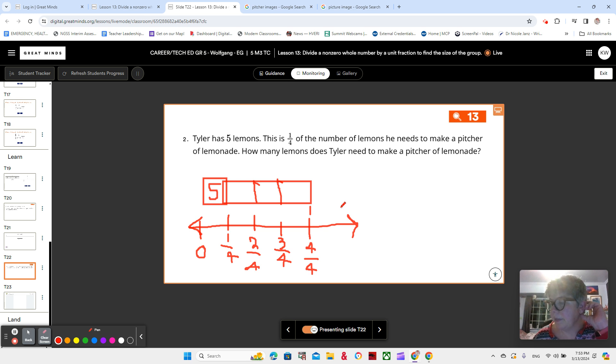All right. So how many lemons does Tyler need to make a pitcher of lemonade? We could be thinking about multiplication, right? And we could also be thinking about division. So let's think about what we've been talking about with division lately. We are asking ourselves that question: five is one fourth of what? That is the question that we are thinking about when we make this division sentence. Five is one fourth of what?